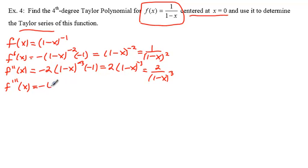times negative 1, the negative signs cancel, and we get 6 times 1 minus x to the negative 4 or 6 over 1 minus x to the 4th power. So now taking the 4th derivative of f, we have the 4th derivative of f at x, equals negative 4 times 6, negative 24,